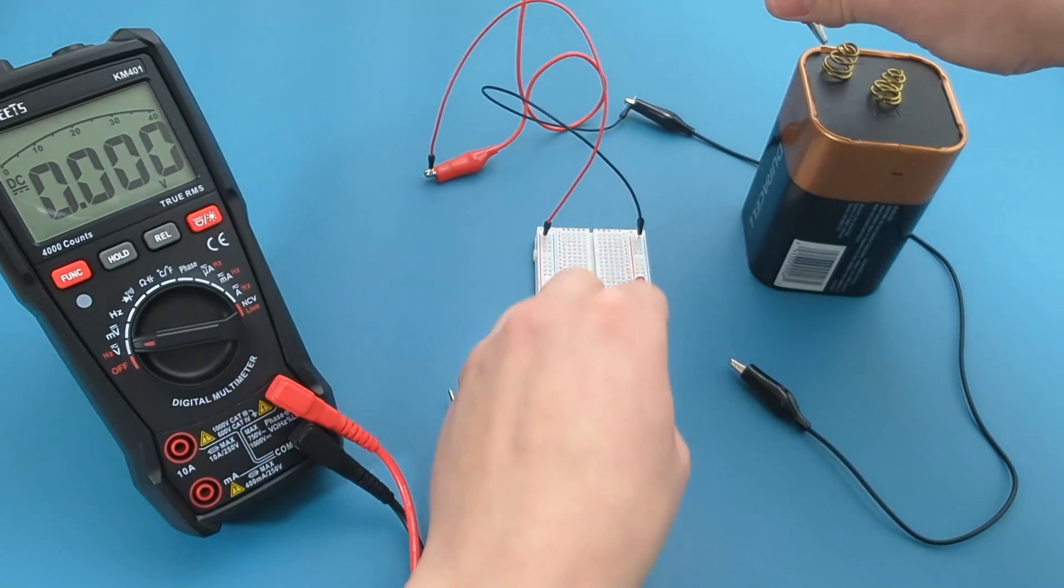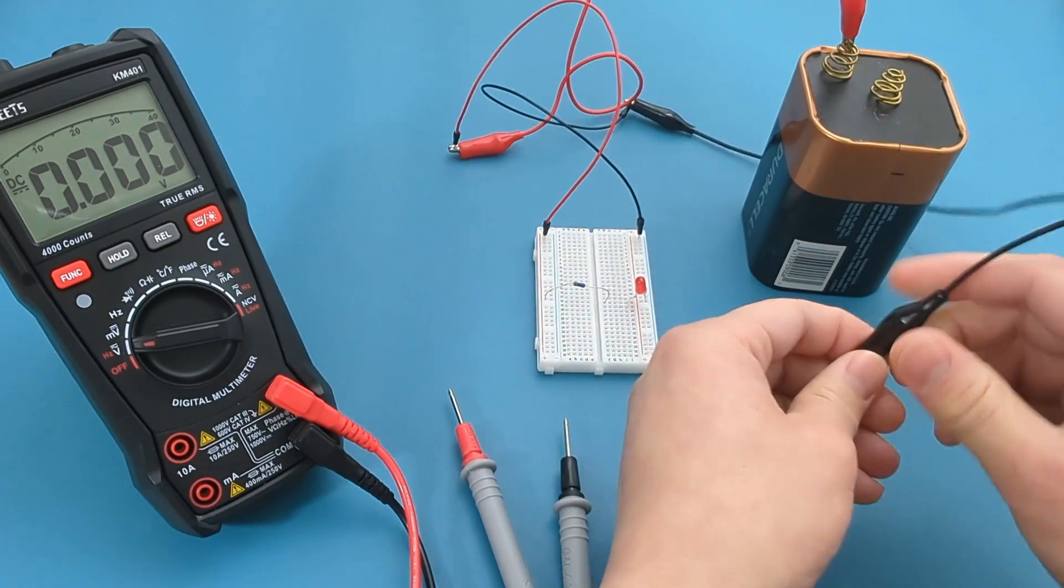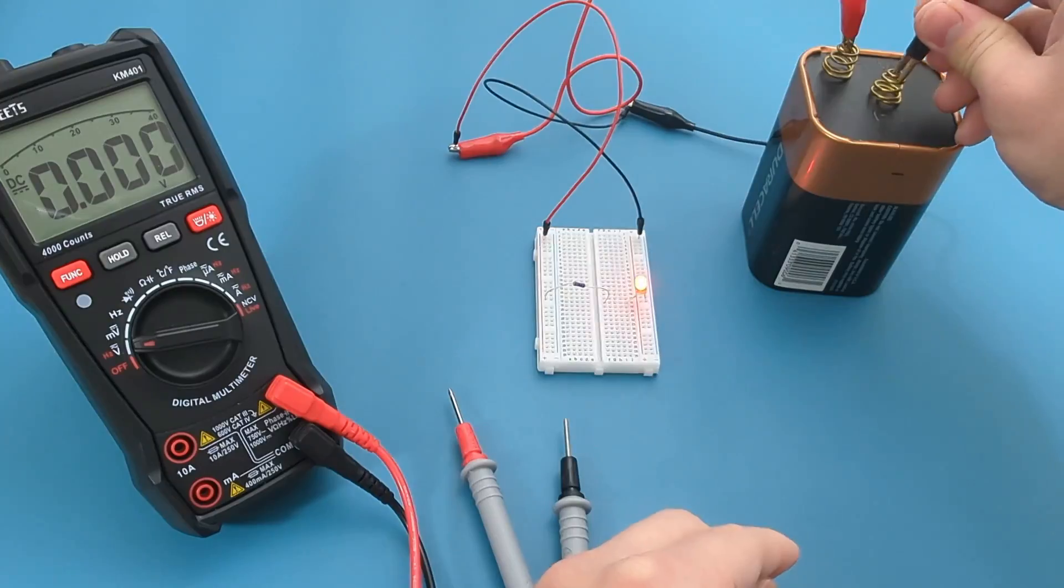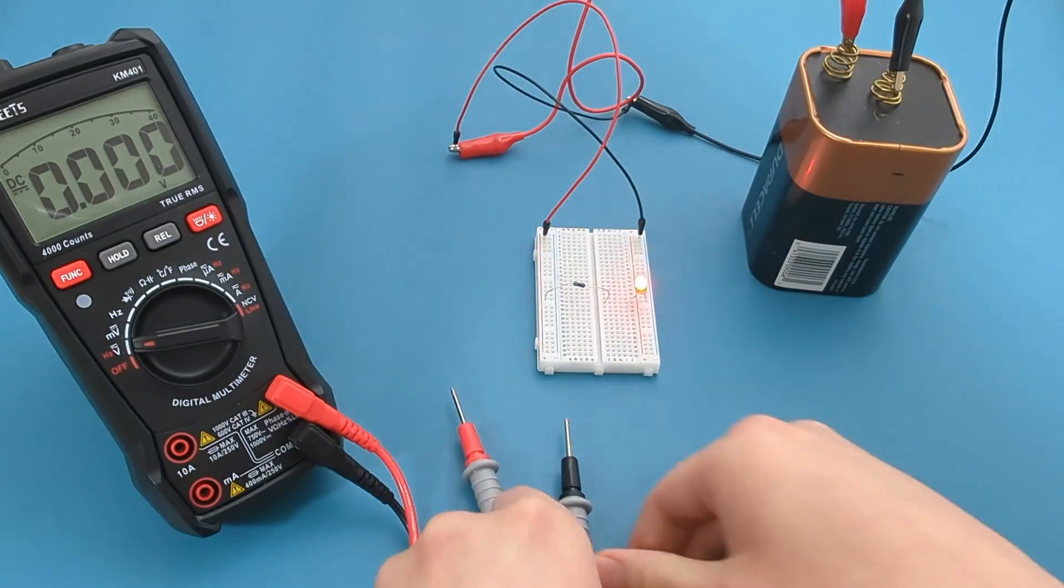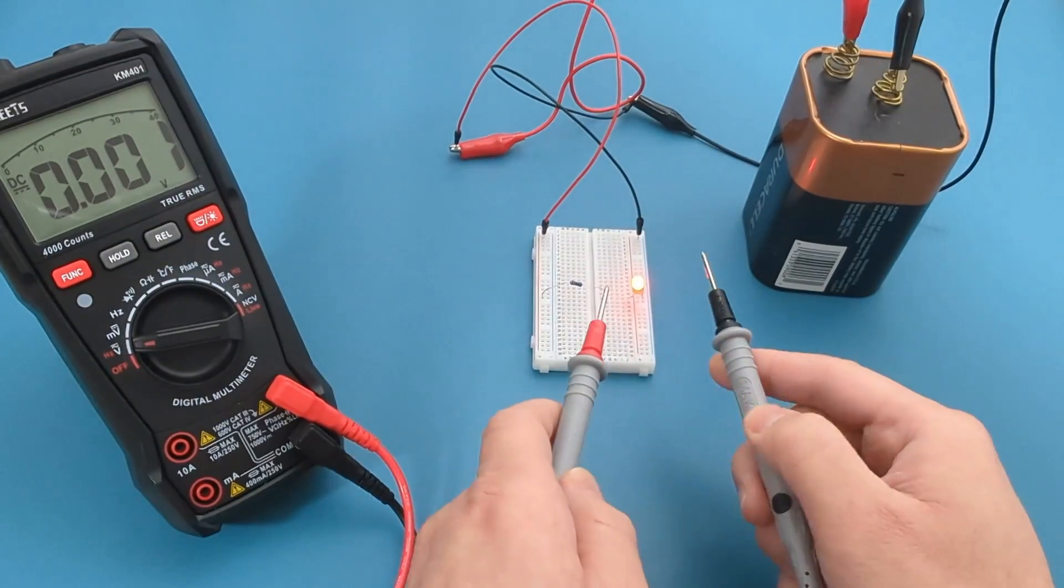Attach the other end of the red alligator clip to the positive terminal of the battery. Attach the other end of the black alligator clip to the negative terminal of the battery. The LED should light up, indicating the battery is still good.